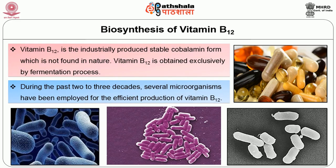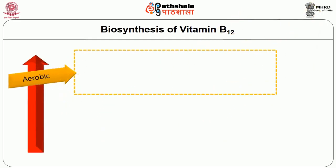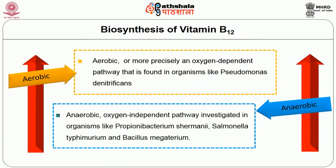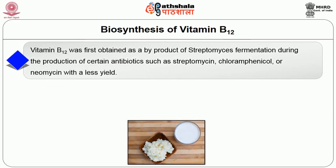Most of the steps in the biosynthesis of vitamin B12 have been characterized in Pseudomonas denitrificans, Salmonella typhimurium and Propionibacterium freudenreichii. There are two different biosynthetic routes for vitamin B12 production: an aerobic, or more precisely oxygen-dependent, pathway found in organisms like Pseudomonas denitrificans, and an anaerobic oxygen-independent pathway investigated in organisms like Propionibacterium shermanii, Salmonella typhimurium and Bacillus megaterium. An outline of the pathway is depicted in the figure. Many of the reactions in the synthesis of vitamin B12 are not yet fully understood.